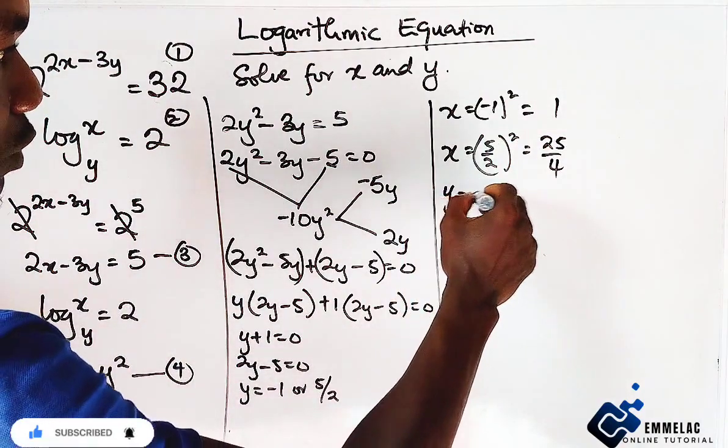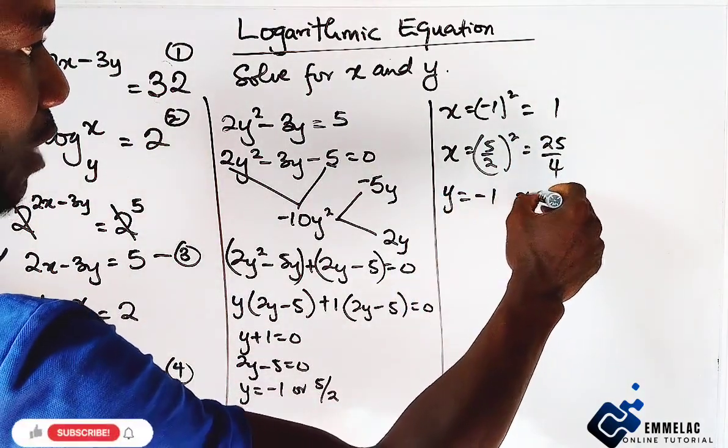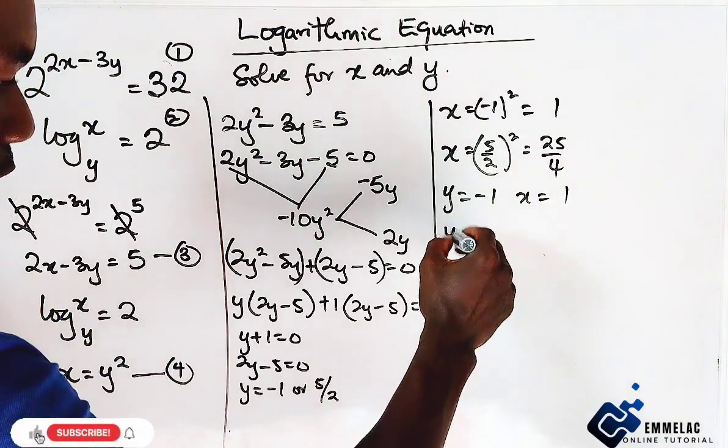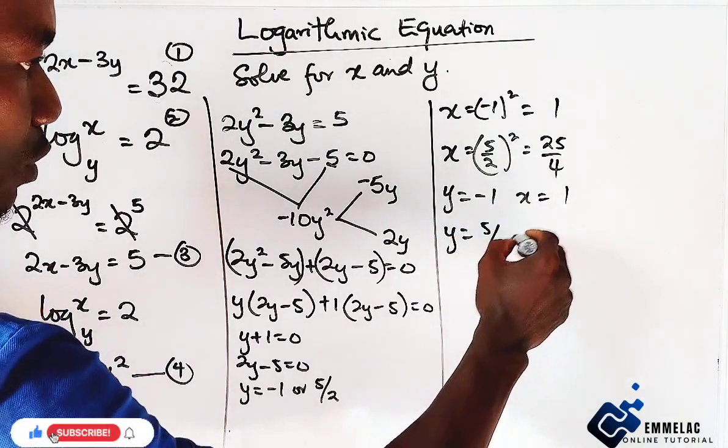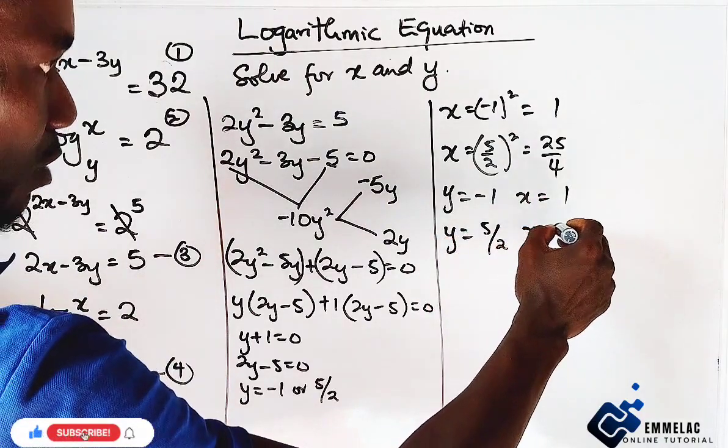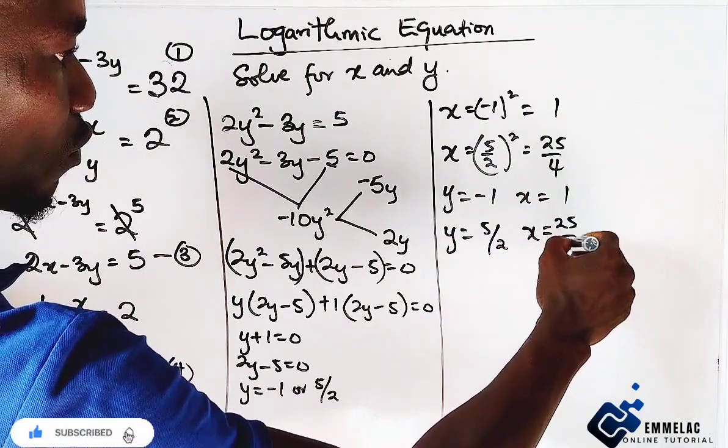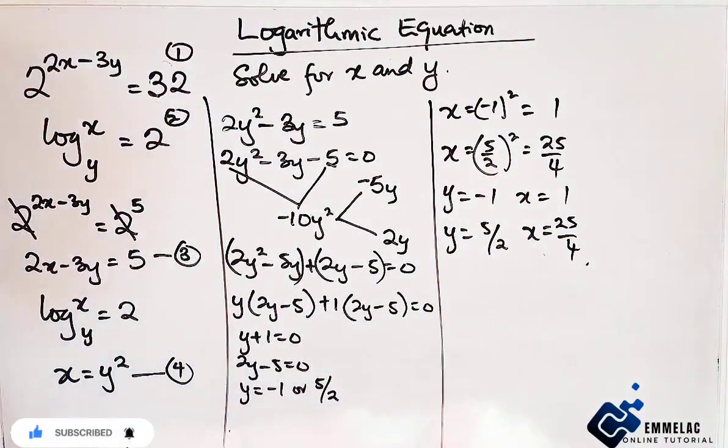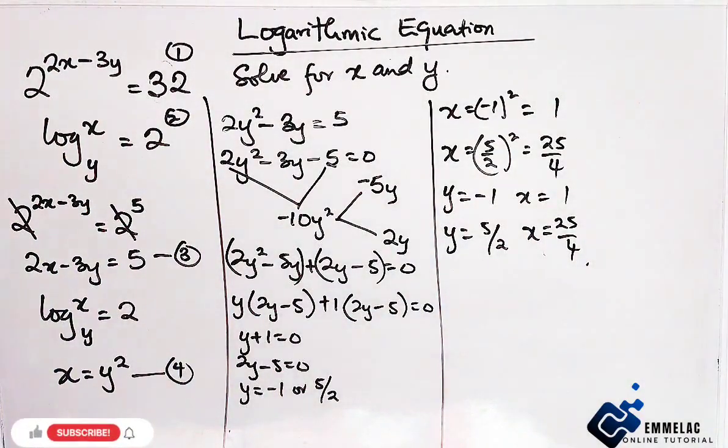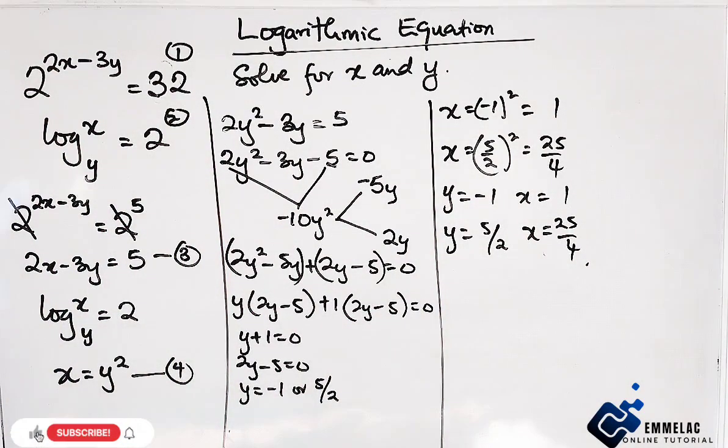For the values, when y equals to minus 1, x equals 1. And when y equals 5 over 2, x equals 25 over 4. These are the final answers. Thank you. And please, subscribe to my YouTube channel if you are new to this channel. God bless you.